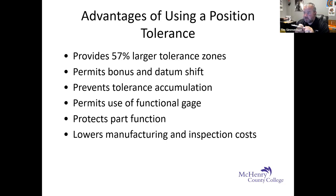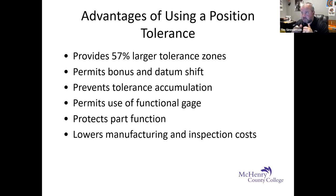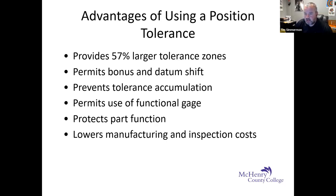Position tolerances are nice because you can build functional gauges and check them relatively easily for production components. The additional tolerances protect part function and truly lower manufacturing and inspection costs. Now I want to switch over to the whiteboard and explain how position tolerance provides that 57% larger tolerance zone compared to standard plus-or-minus.